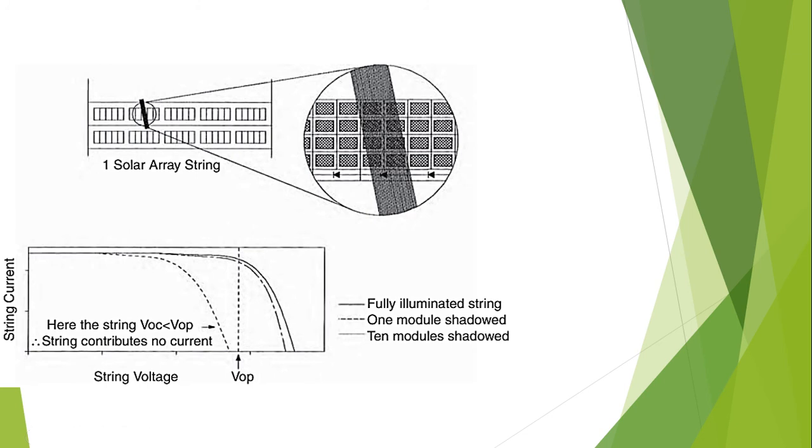This is the curve for fully illuminated string, and some power will be lost if one module is shaded. However, if ten modules are shaded, this curve indicates that the string will contribute to no current.